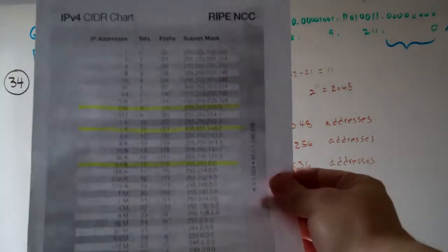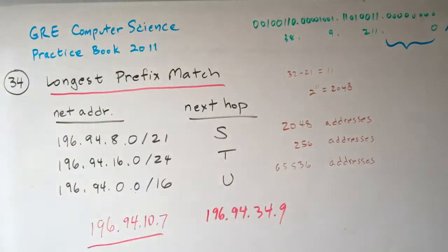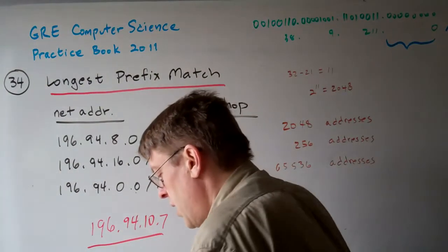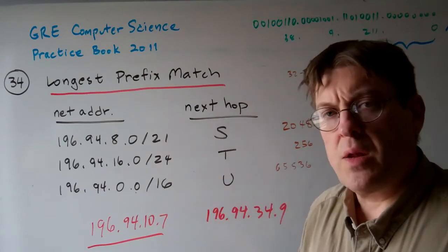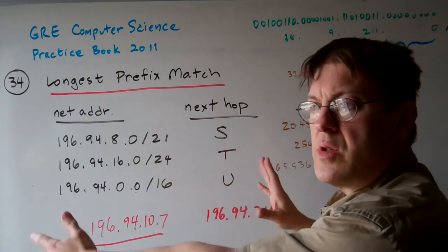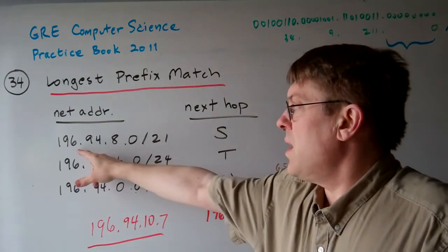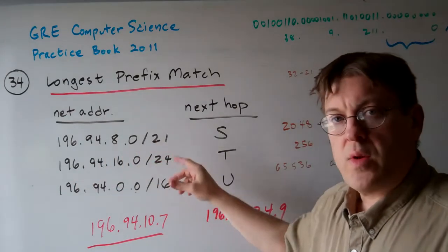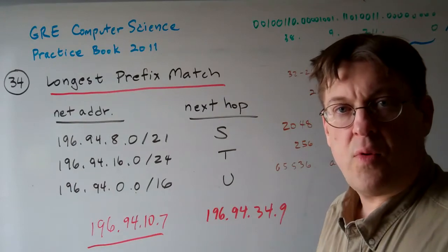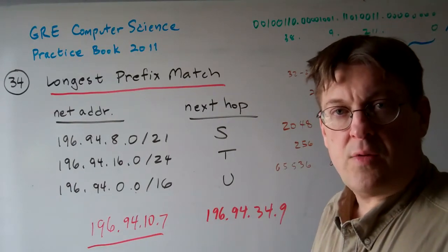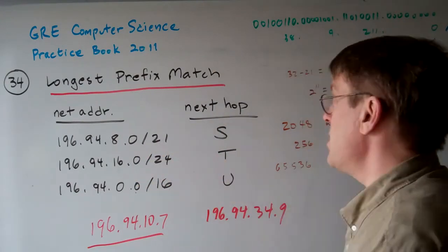This is what it looks like. And you can kind of see, well, I guess you can't see too well, but basically, the larger the number is here, the smaller the range of addresses. In other words, the larger the range of the prefix that it covers. So when it says 196.94.8.0 slash 21, what that means is the first 21 bits in the 32-bit IP address belong to this prefix. The rest of them are free to be the rest of the range.